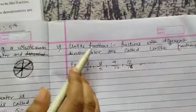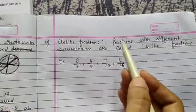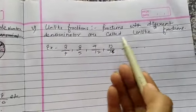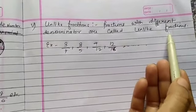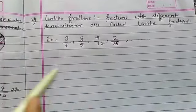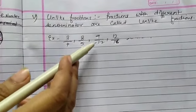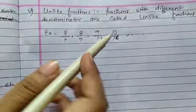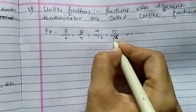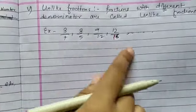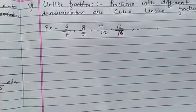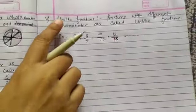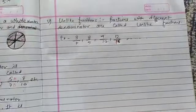Now, what about unlike fraction? Fractions with different denominators are called unlike fractions. Example: 3 by 7, 8 by 5, 9 by 12, 12 by 16. In each fraction, the denominators are different. So these types of fractions are called unlike fractions.